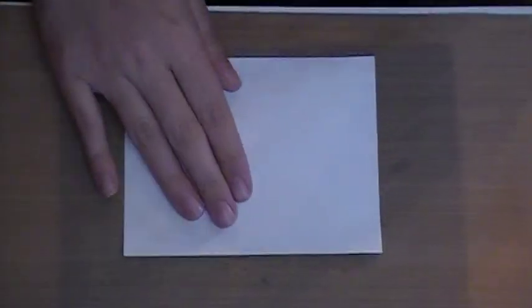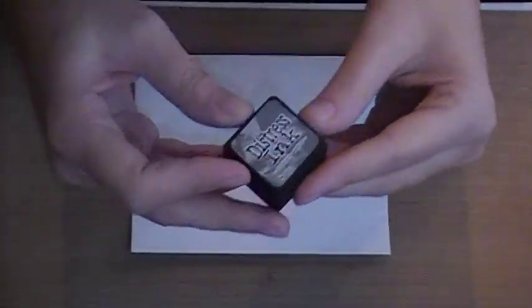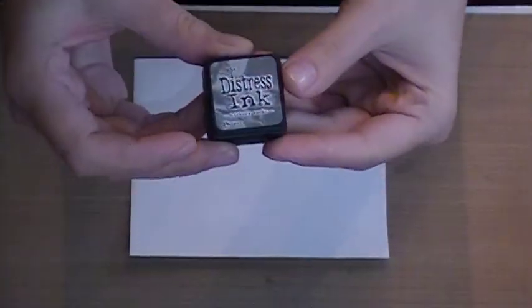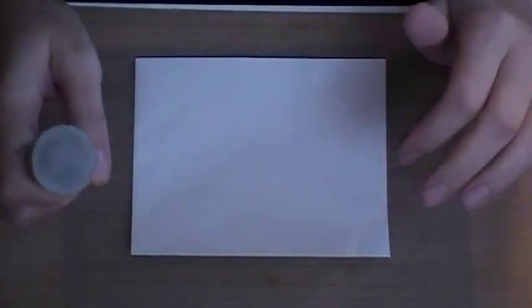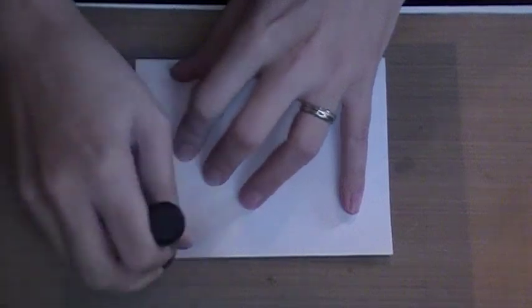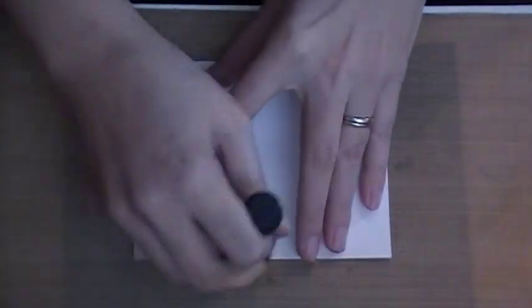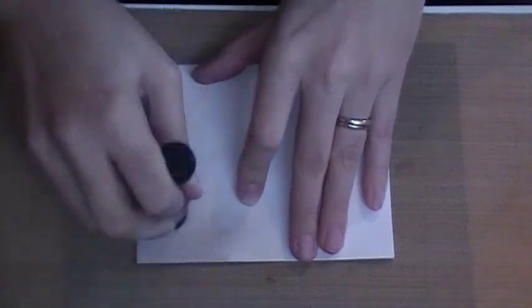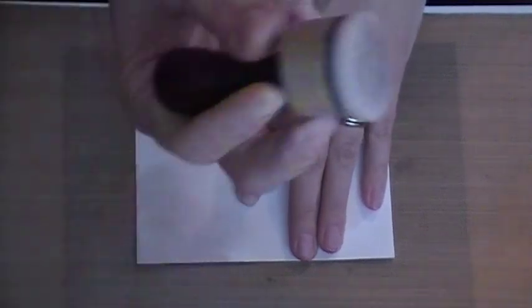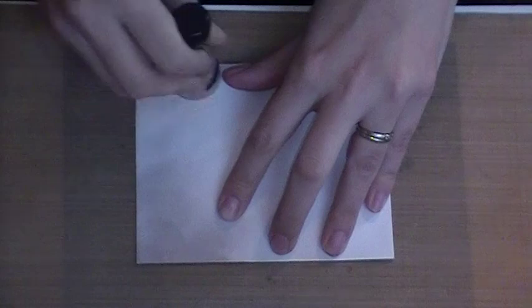We're gonna start with some distress ink in hickory smoke. I do record my videos upside down so that I don't have to rotate them, so hopefully bear with me, things look a little funny. I'm trying to do it backwards for you guys. I'm just gonna start by adding a light distressing with hickory smoke all over my envelope.